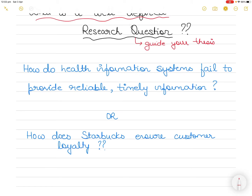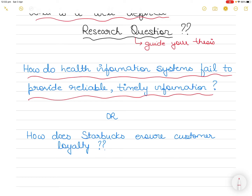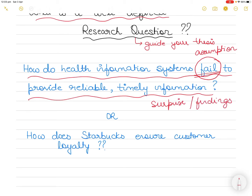Question number one: how does health information systems fail to provide reliable and timely information? To you it may seem like a reasonable question, but why is it not a research question? It is not a research question because here we are assuming that the health systems are failing. We have already made an assumption not backed by evidence. There are no possibilities other than to confirm this statement. A research question has to surprise you with your findings - you cannot know the answer already, that is why you are researching.